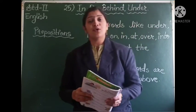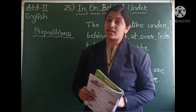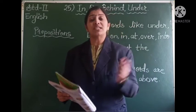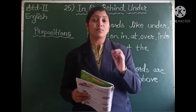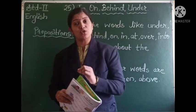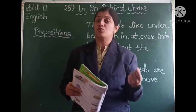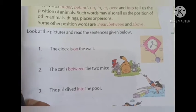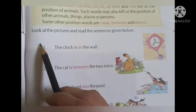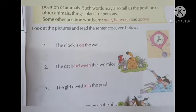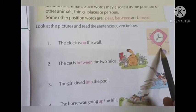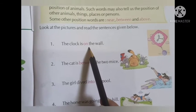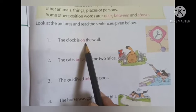Now we are going to see some exercises given in our book. We will see which preposition we can use in the blanks, or if sentences are given we have to identify and find out the word which tells us about the position. Students, this is page number 67 of your grammar book. Here you can see: look at the pictures and read the sentences given below. There is a picture of a clock — the sentence says the clock is on the wall. The preposition here is on, already given in red color.